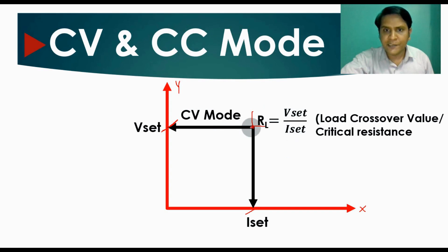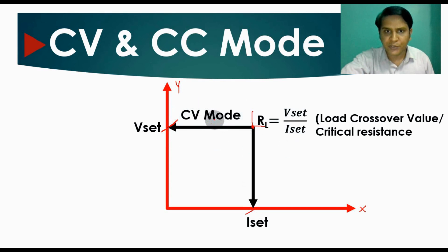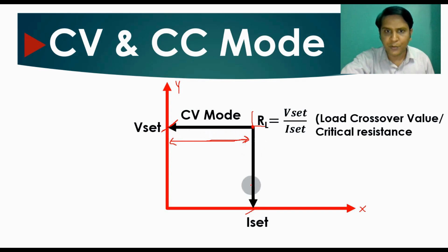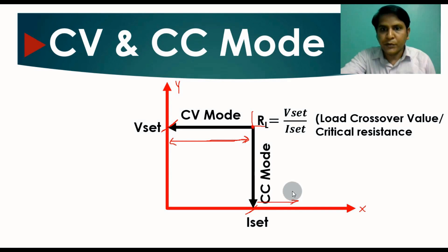Now let us understand what CV mode is. Since you have I-set here, if you are drawing current within the limit of I-set — that is, drawing current from zero up to I-set — you are not crossing your current limit. That means your power supply is running in CV mode.